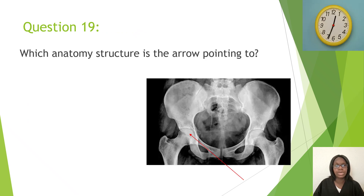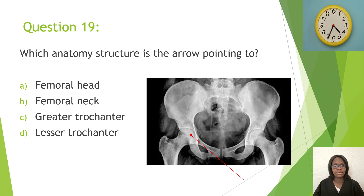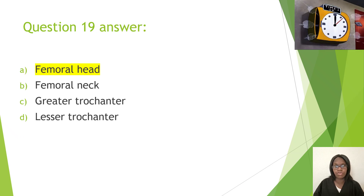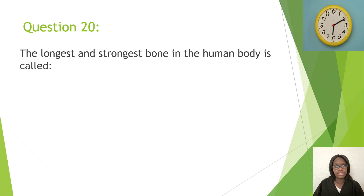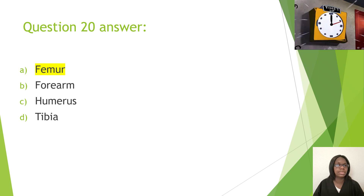Question nineteen: Which anatomy structure is the arrow pointing to? A, femoral head; B, femoral neck; C, greater trochanter; D, lesser trochanter. The correct answer is A, femoral head. Question twenty: The longest and strongest bone in the human body is called — A, femur; B, forearm; C, humerus; D, tibia. The correct answer is A, femur.